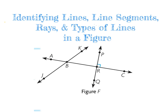Right here in this picture we have a figure. It's labeled as Figure F, if you can see on the bottom. All figures are usually given a name — Figure F, Figure A, Figure B — it just identifies the figure. A figure is a bunch of different lines or line segments and points all put together to make one specific picture.